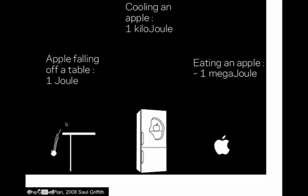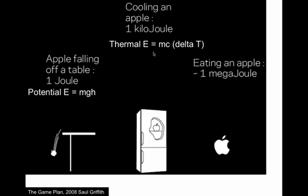If an apple falls off a table, it's about a joule. That's potential energy, gravitational potential energy, MGH. However, cooling an apple, the thermal energy required is considerably more, about 1,000 joules. And in eating an apple, what it provides for your body is about a megajoule, a million joules, and that's the chemical potential energy of all the sugars that can be burned in your body.